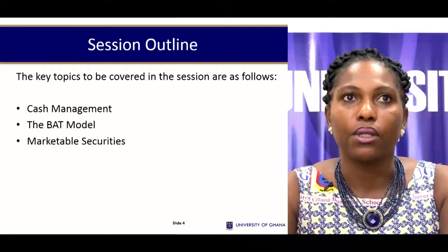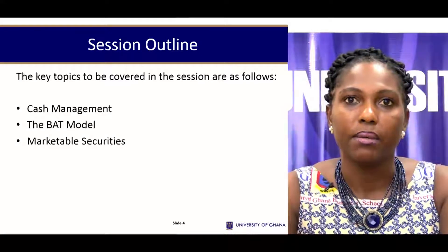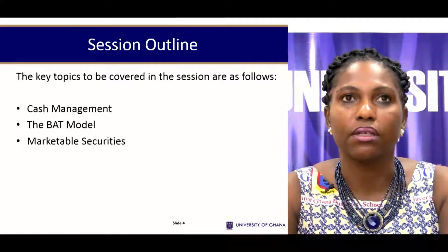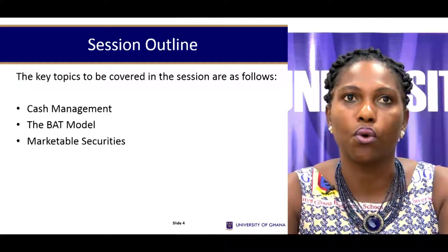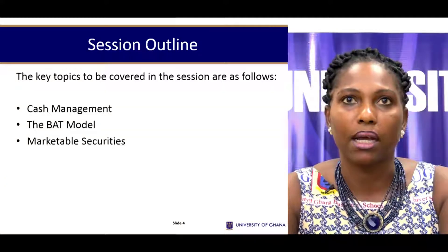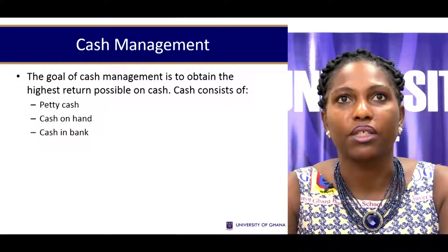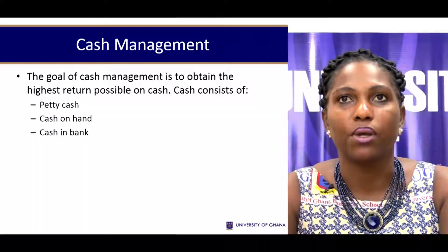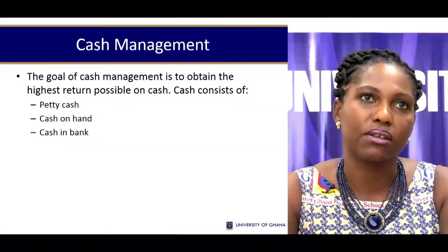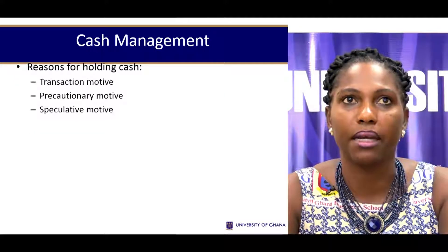For our session we are going to be looking at cash management in general, the BAT model — which is a model for determining optimal cash levels to hold — and also marketable securities. The goal of cash management is to obtain the highest possible return on cash, and we look at its components: petty cash, cash on hand, and cash at the bank.